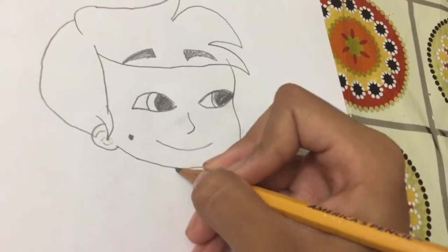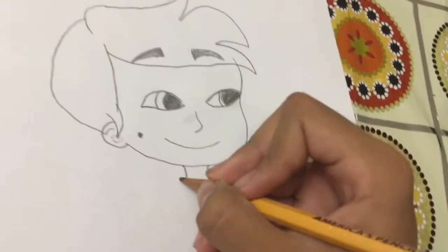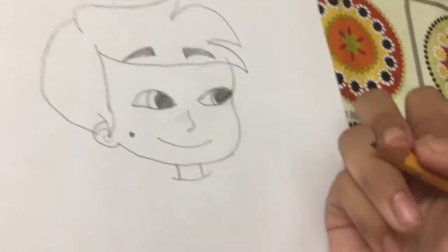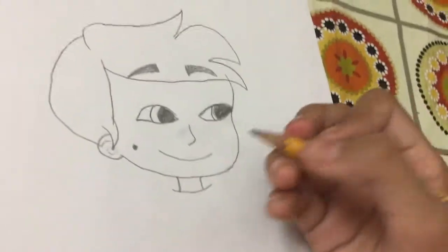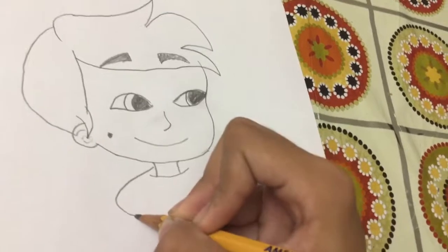And now we draw his neck, and draw another line for his shirt. And come from the back, so he's wearing a jacket. And do the same on the other side.